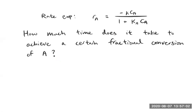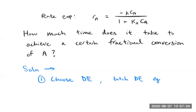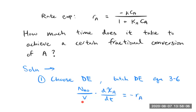Let's start with a design equation. This is batch, so we don't have a different design equation for gas versus liquid — the material balance is still the same. We'll go with the batch design equation, Equation 3-6, written in terms of conversion since that's what's asked for. That gives us: (N_A0 / V) · (dX_A/dt) = −r_A.